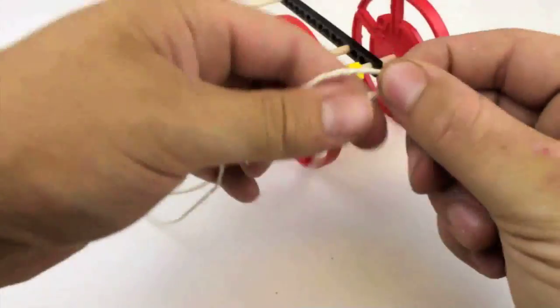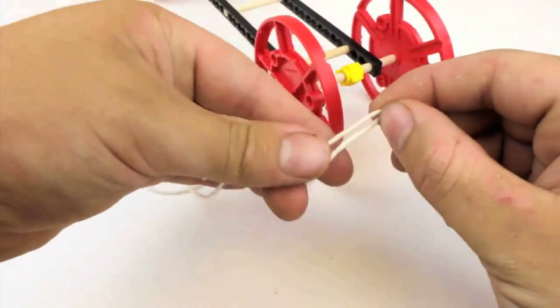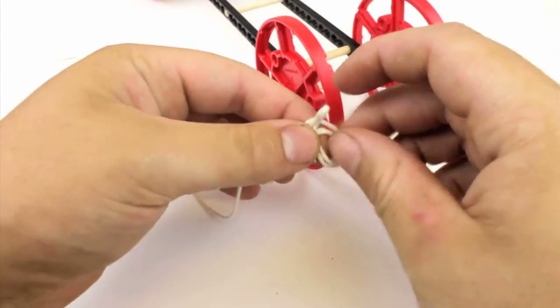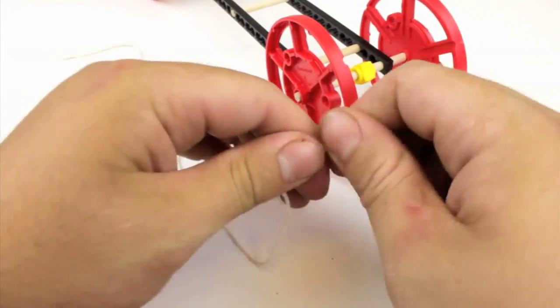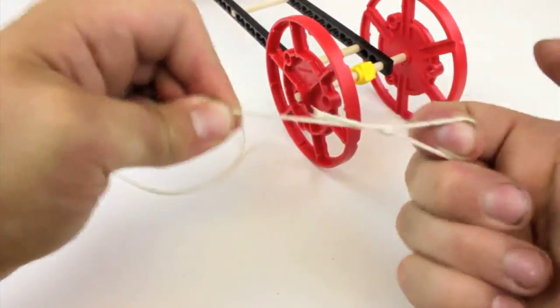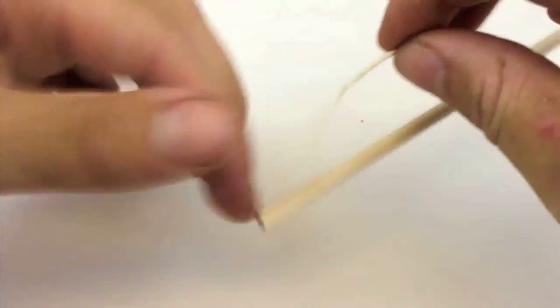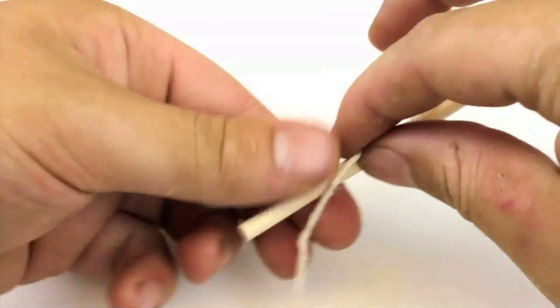Cut a piece of string that is 75cm long which is about 30 inches and tie a knot at the end that won't slip. Take the other end of the string and tie it tight to the end of the dowel.